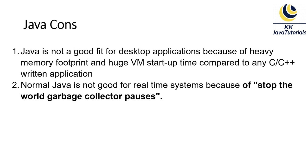The second disadvantage is that Java is not good for real-time systems because of the stop-the-world garbage collection event. Stop-the-world means the JVM stops the application from running to execute garbage collection. Every thread except those needed for GC will stop their tasks, and the interrupted tasks resume only after GC completes. GC tuning often means reducing these stop-the-world pauses.